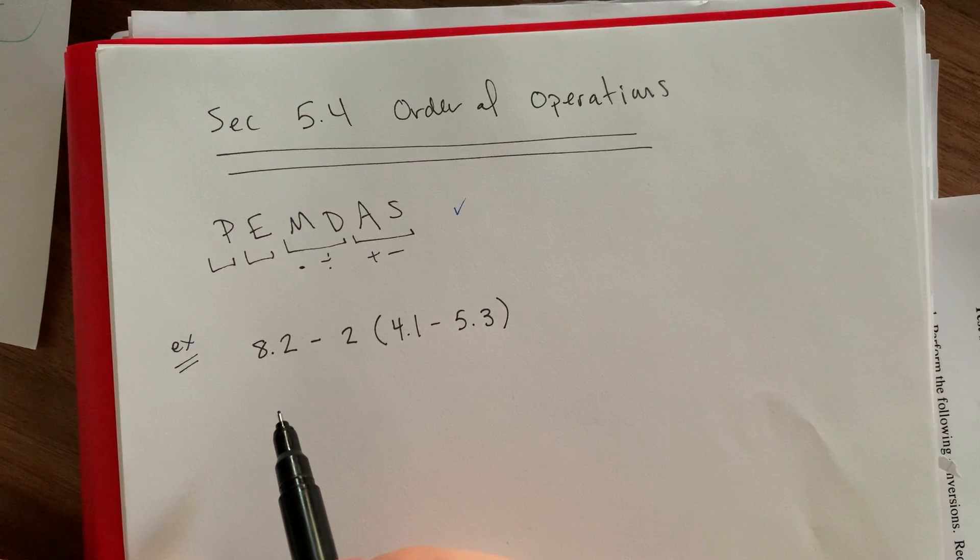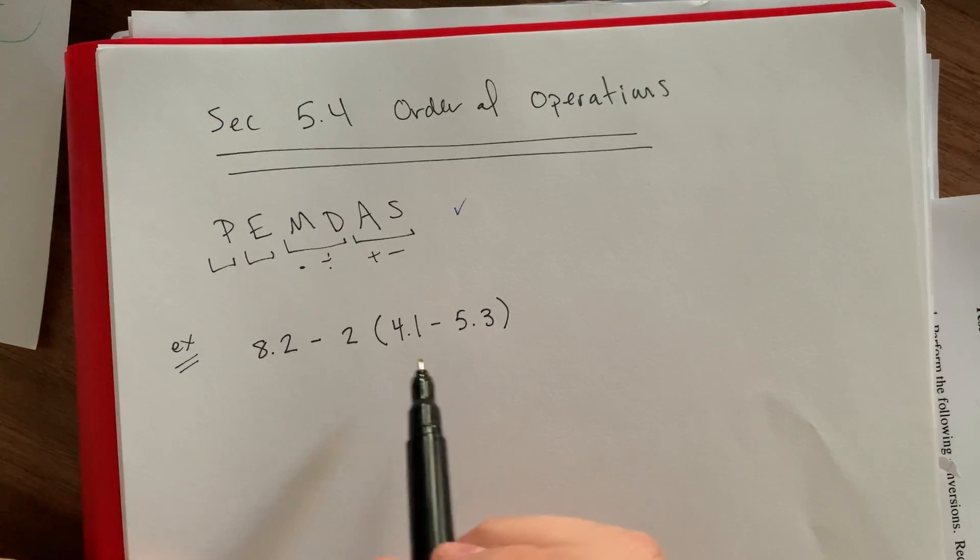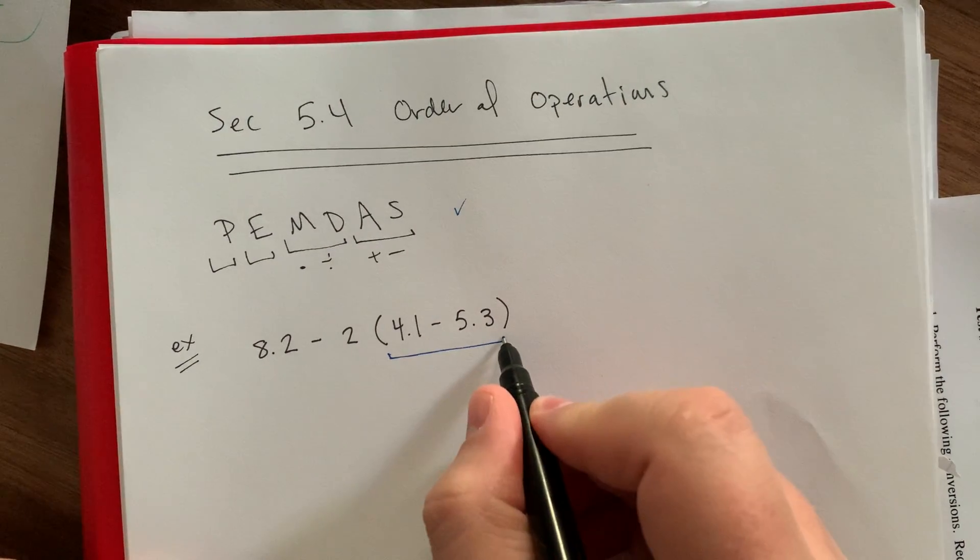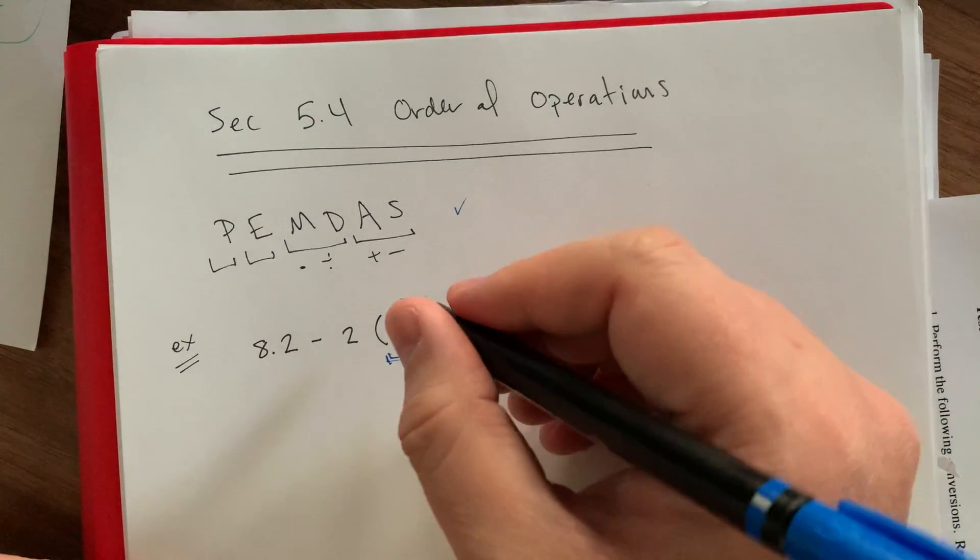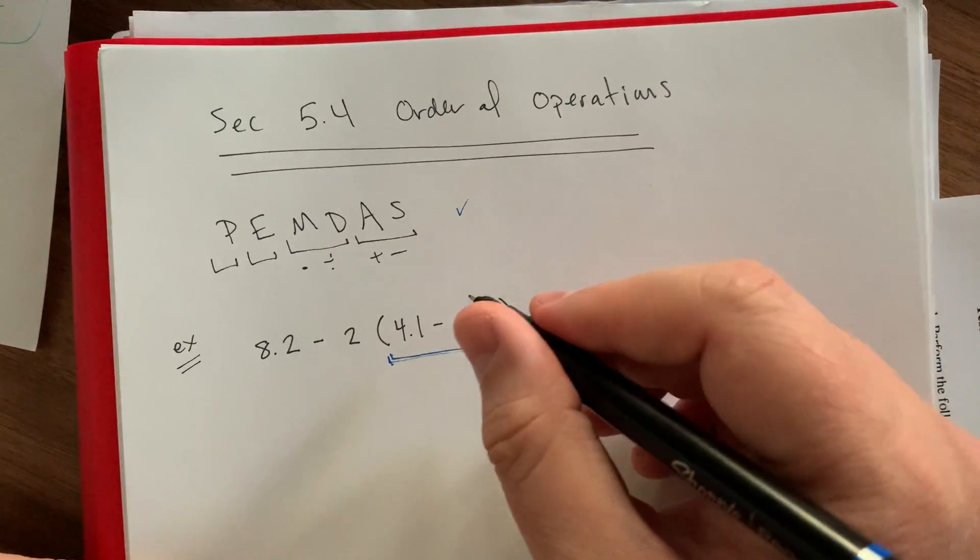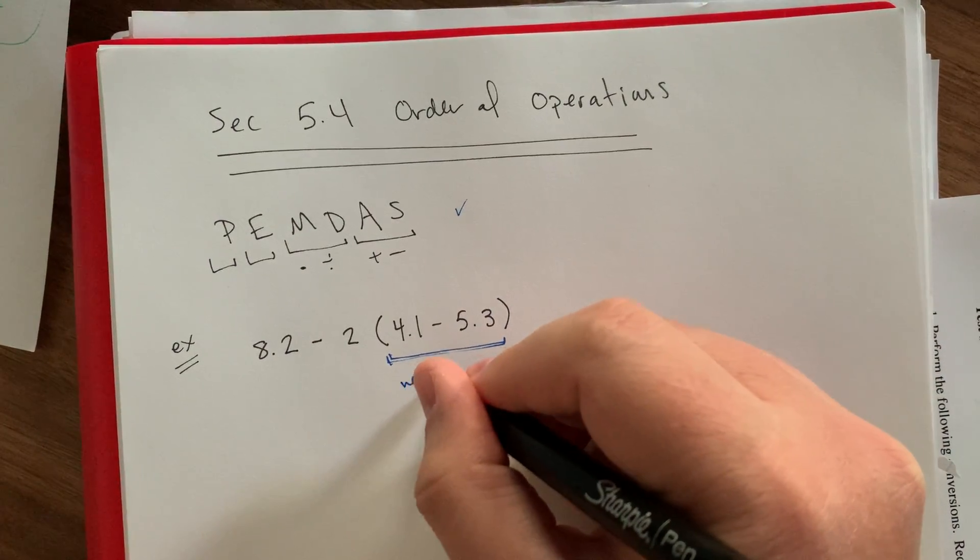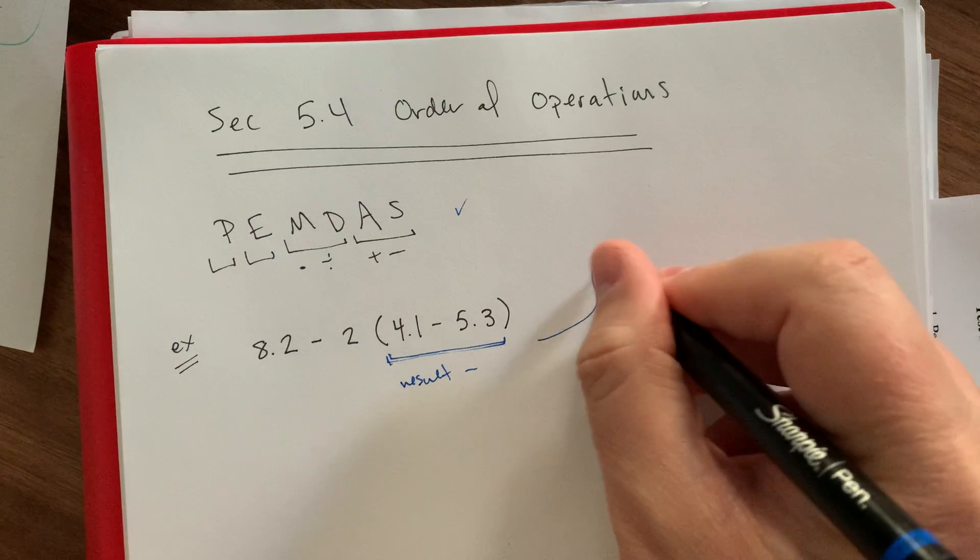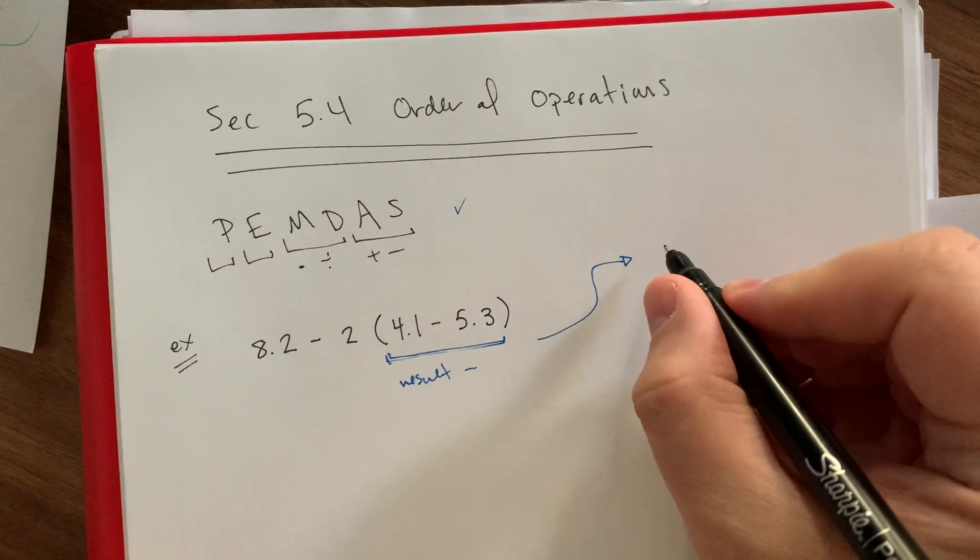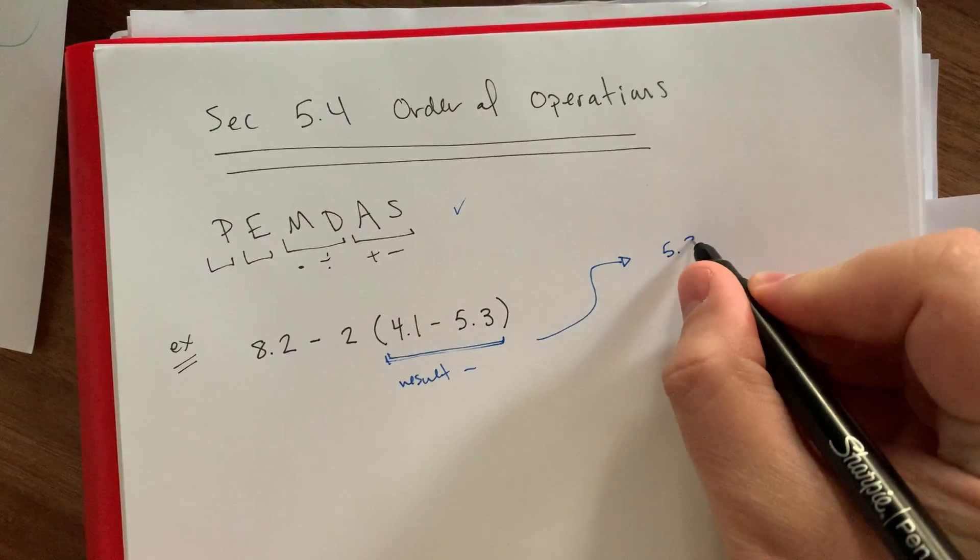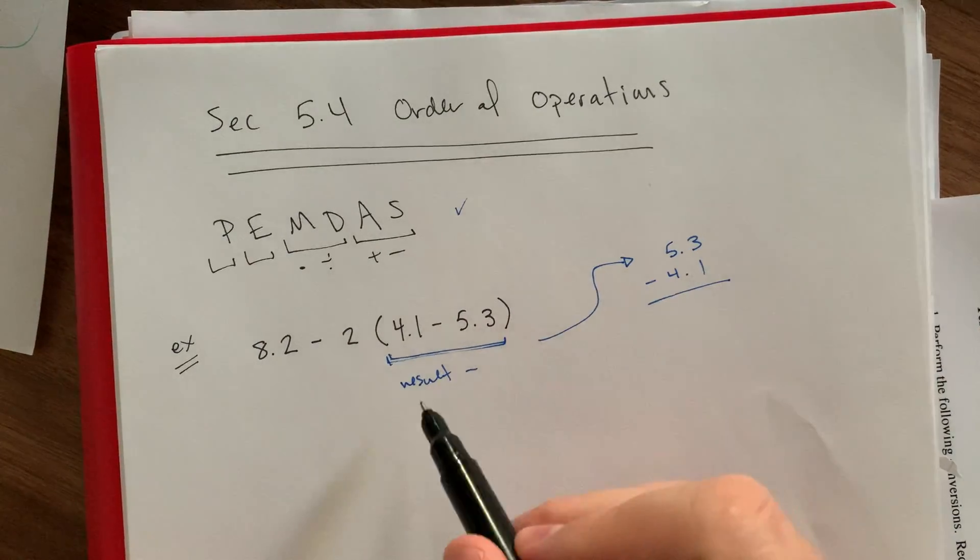I have just a short example here. This is 8.2 minus 2 times the quantity 4.1 minus 5.3. Our parentheses here are going to be where we start. This is 4.1 minus 5.3, so this is a smaller number. We're subtracting a larger number away from it, so the result there is going to be negative. Because this is all decimal arithmetic, we're going to pull a lot of the actual arithmetic off to the side.